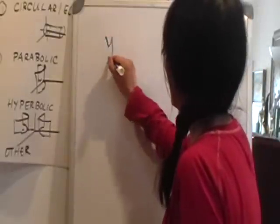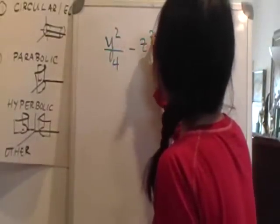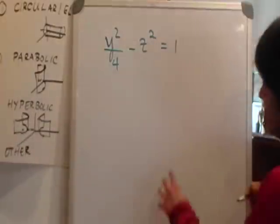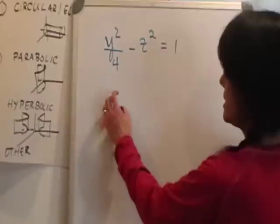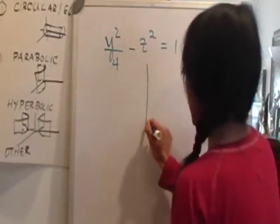So we'll have y squared over 4 minus z squared, let's say, is equal to 1. So hopefully you recognize that this is a hyperbola on the yz plane.